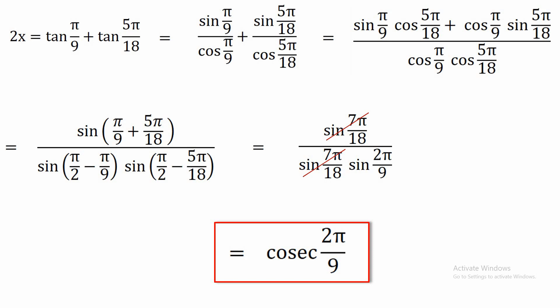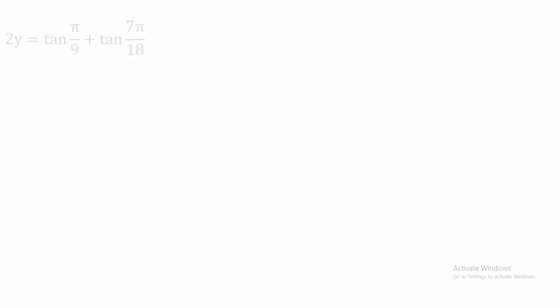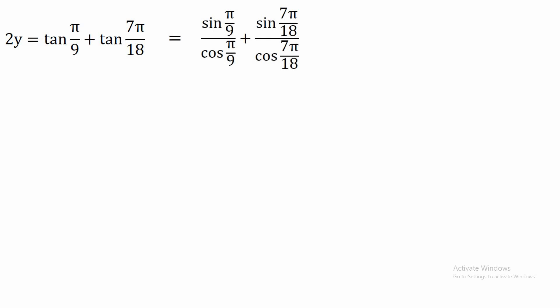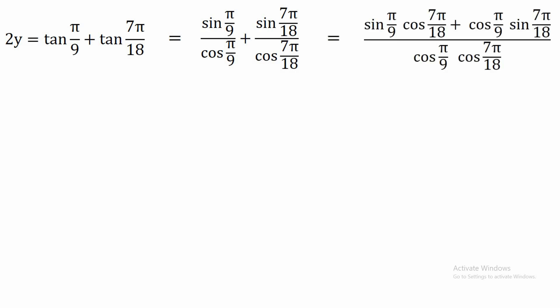Similarly, we solve the second expression: 2y = tan(π/9) + tan(7π/18). Converting to sin/cos form gives sin(π/9)/cos(π/9) + sin(7π/18)/cos(7π/18). By taking the LCM and cross multiplication, we get [sin(π/9)·cos(7π/18) + cos(π/9)·sin(7π/18)] divided by cos(π/9)·cos(7π/18).